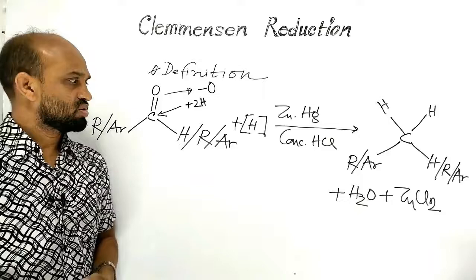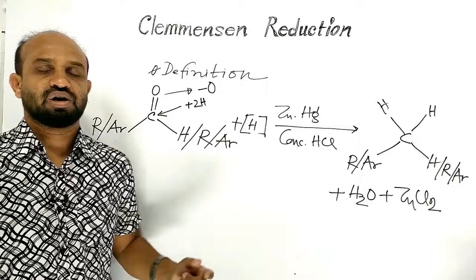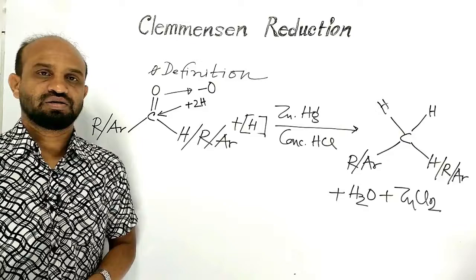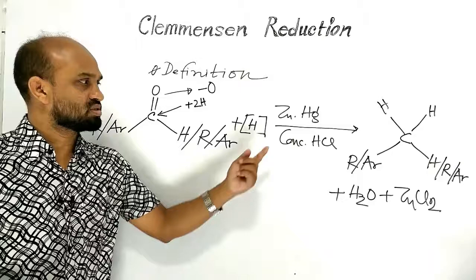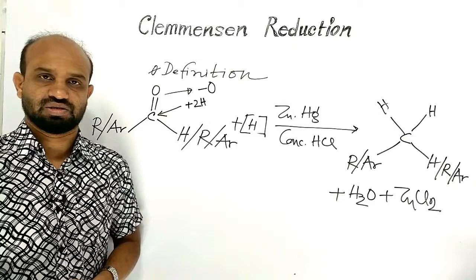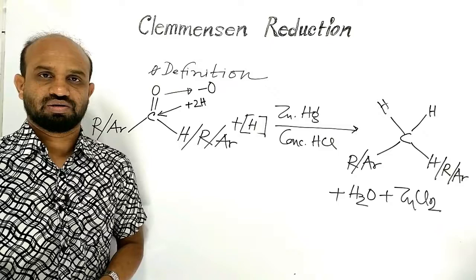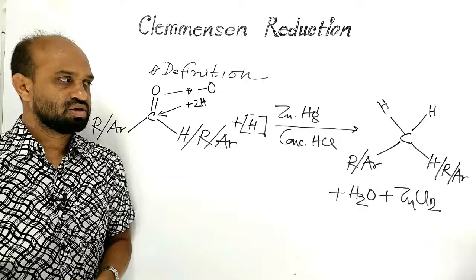As in this reaction, removal of oxygen and addition of hydrogen are occurring at the same time, it is a reduction reaction, named after the Danish chemist Eric Christian Clemmensen. The definition: the reaction of aldehydes or ketones with Clemmensen's reagent — zinc amalgam and concentrated hydrochloric acid — by which alkanes are prepared, is known as Clemmensen's reduction.